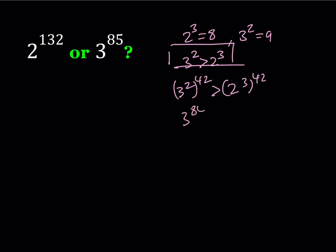This is going to be 3 to the power 84 and on the right hand side I'm going to get 2 to the power 126. Now, if you look at the situation where you have 3 to the 84 is greater than 2 to the power 126